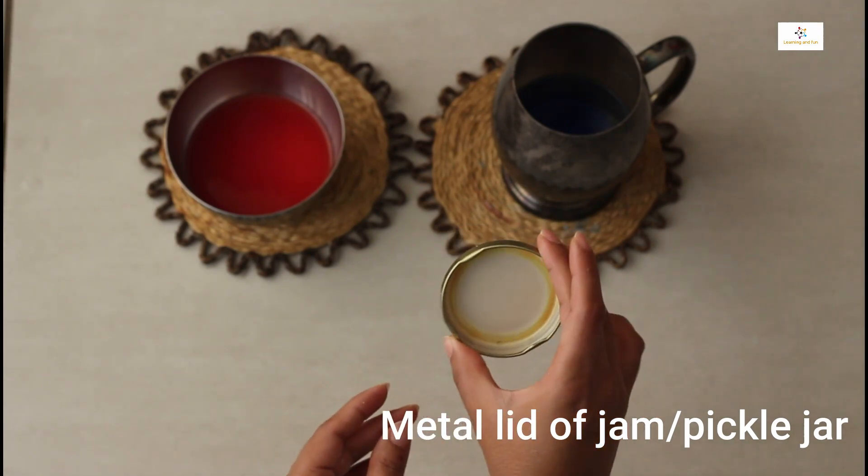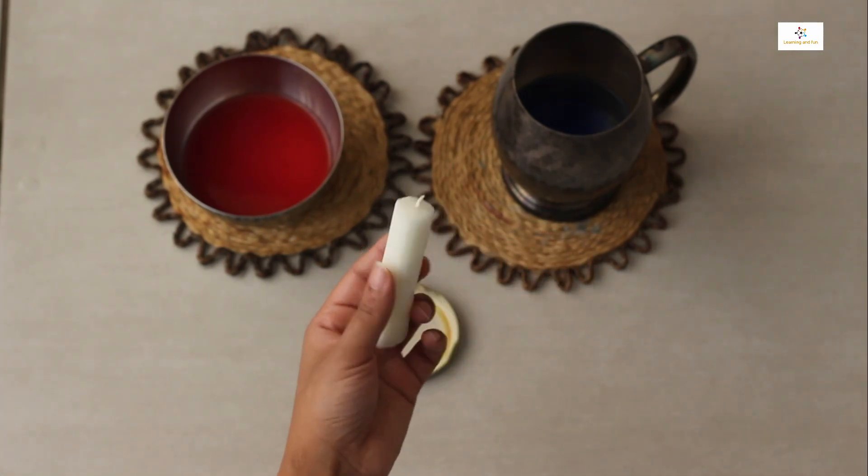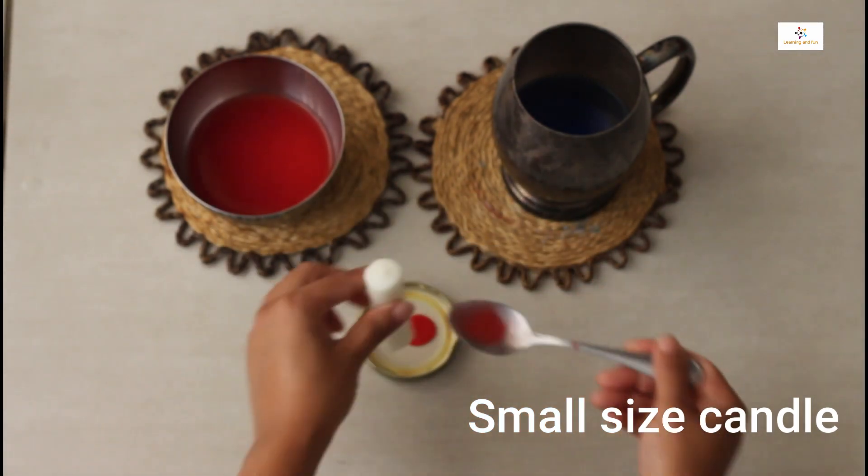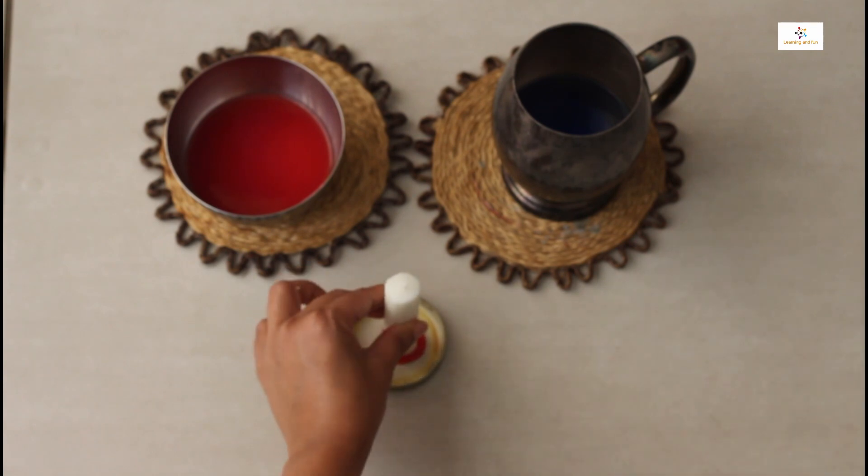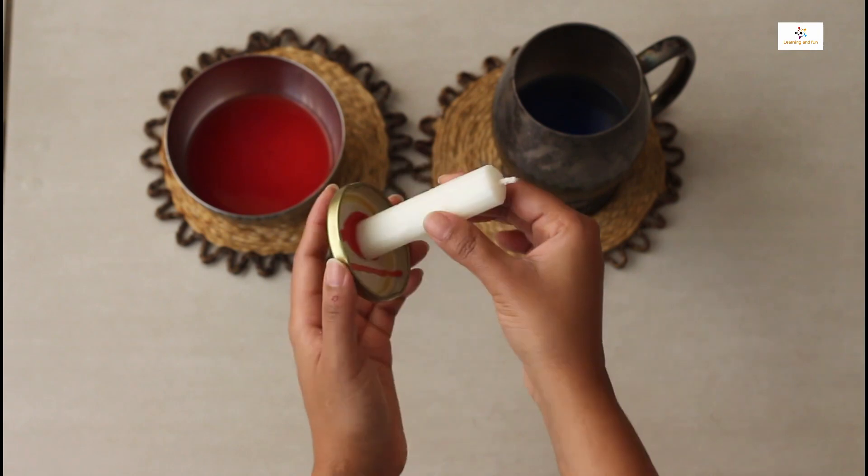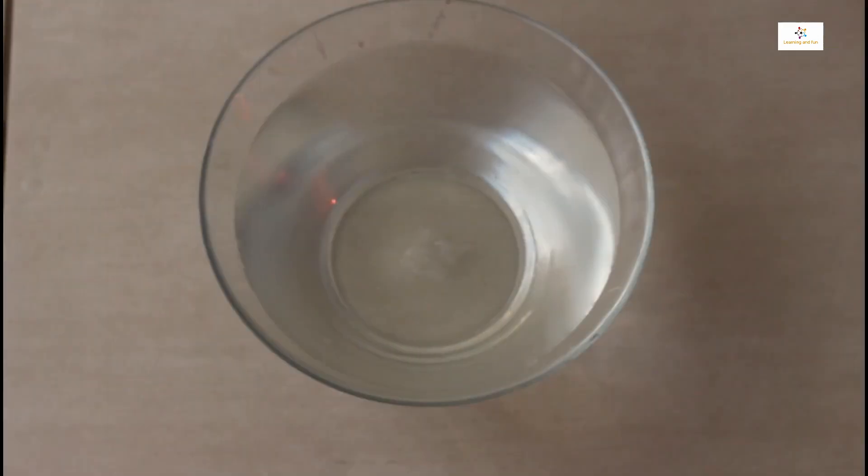I'm using a jam bottle lid and a candle. Just have a look how I'm doing it. I'm fixing the candle first on the lid by using some melting wax as you can see. Make sure it should be fixed properly. Here I've taken a bowl of ice cold water.